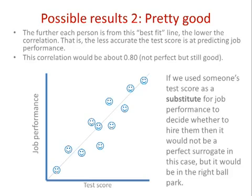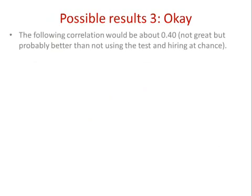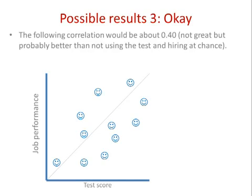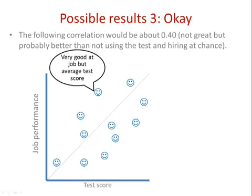Now we're getting into realms where it's still OK — still getting something that's probably worth doing, but it's getting less impressive. This correlation here would be about 0.4. We can still see a clear diagonal relationship, so generally higher test scores relate to higher job performance, but there's a lot more noise in the data. Test score is now a much more inaccurate predictor of job performance, and there are a couple of outliers.